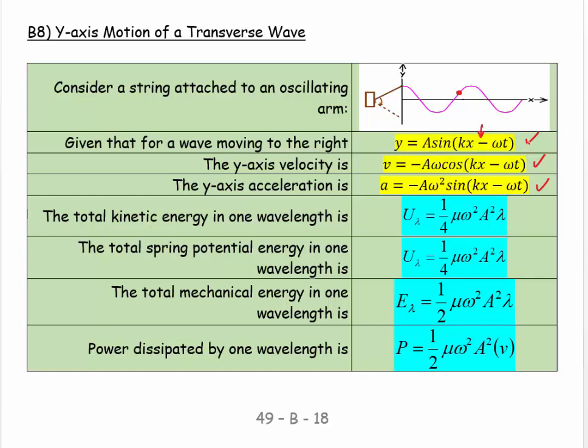What's not so accessible are these next few things, basically the energy in one wavelength. So what's the total kinetic energy in one wavelength? If kinetic energy equals one half mv squared, and you have an expression for v, then you write down the expression and integrate it over one wavelength. What you find is you get (1/4)μω²A²λ.